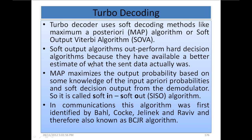The turbo decoder uses soft decoding methods like the maximum a posteriori (MAP) algorithm or soft-output Viterbi algorithm (SOVA). Soft-output algorithms outperform hard-decision algorithms because they have a better estimate of what the sent data actually was. We have seen the hard-decision algorithm in Viterbi form in convolutional decoding. MAP maximizes the output probability based on knowledge of input a priori probabilities and soft-decision output from the demodulator — it is called a soft-in soft-out algorithm. This algorithm was first identified by Bahl, Koch, Jelinek, and Raviv, and is therefore also known as the BCJR algorithm.